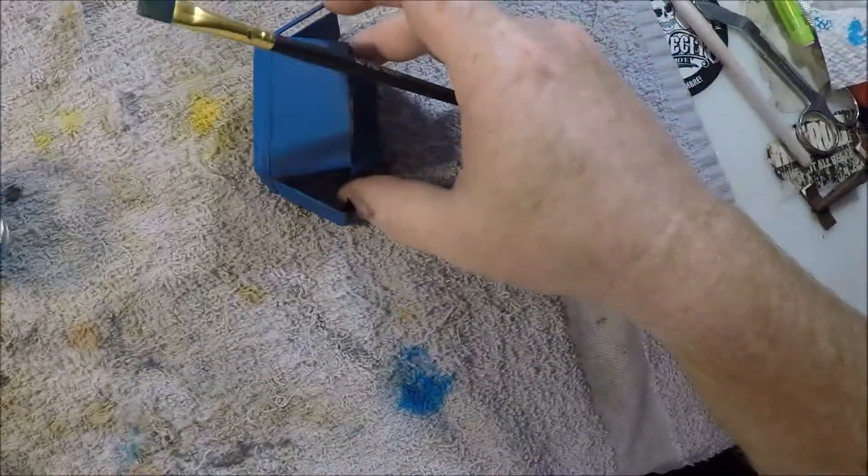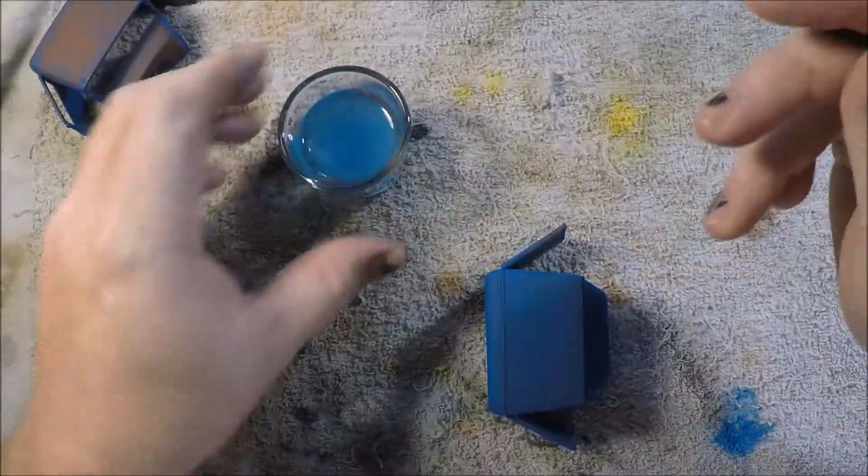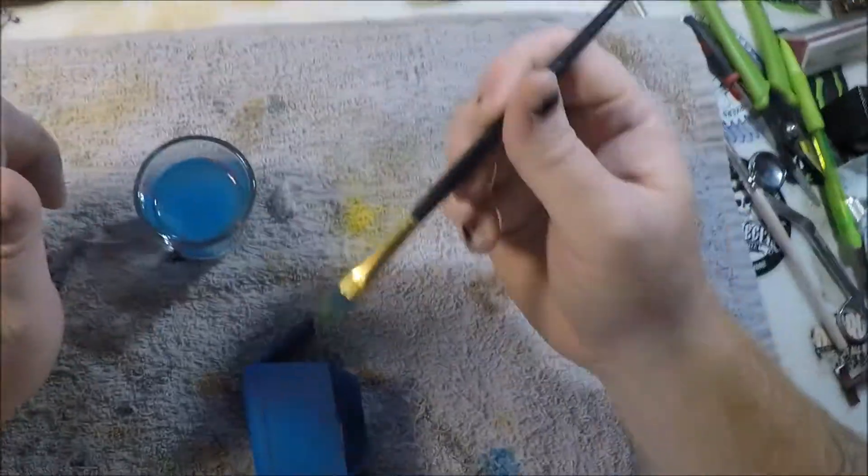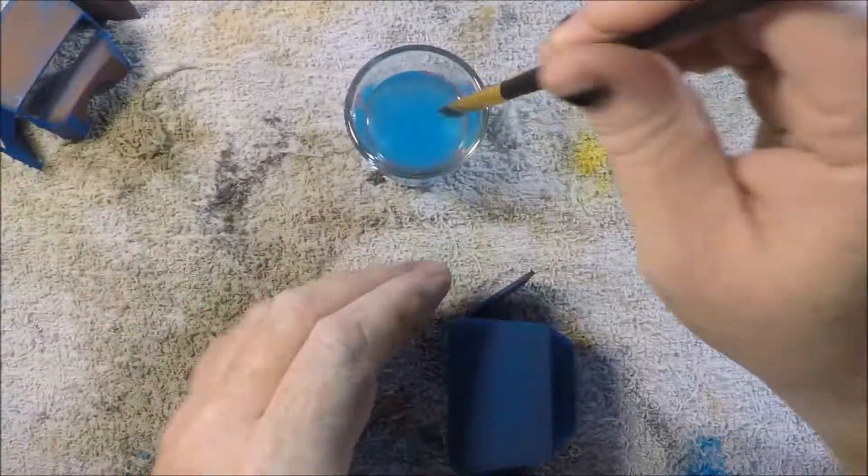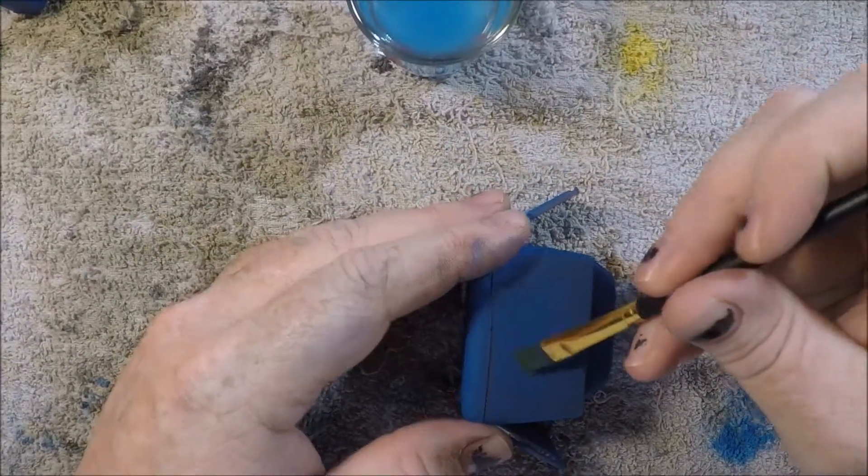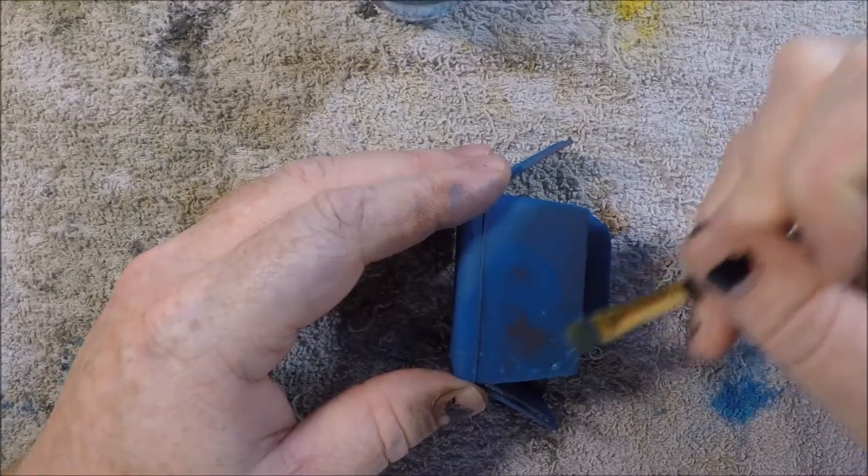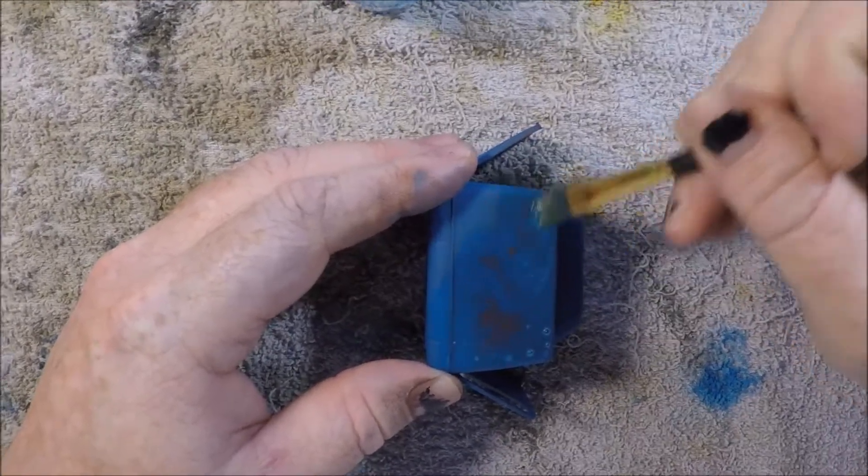So, we've got this one here that we just got through painting. We've got water and then we've got just a brush here. What you do is you just brush it on and rub it real good and it brings that acrylic paint right up.